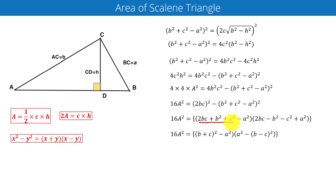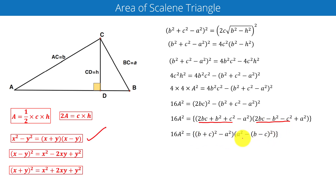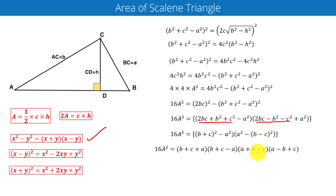This expression can be written as (b plus c) squared, and this expression as negative (b minus c) squared. Applying the difference-of-squares identity again on the right-hand side, we get the product: (b plus c plus a) times (b plus c minus a) times (a plus b minus c) times (a minus b plus c).